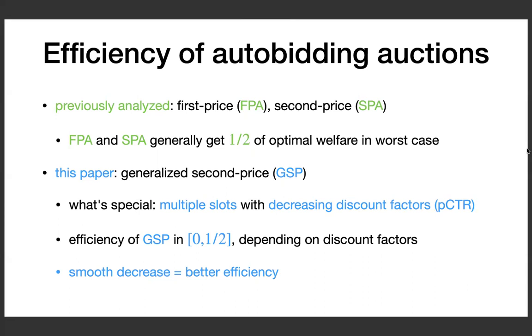The formula is somewhat involved, but the takeaway message is that we generally want the discount factors to decrease smoothly. And the more smooth they are, the better efficiency we get.